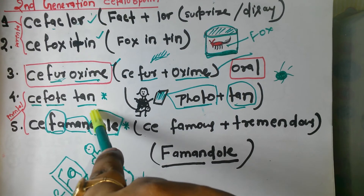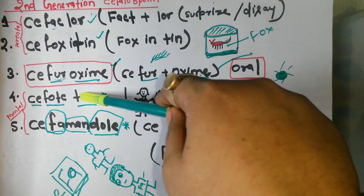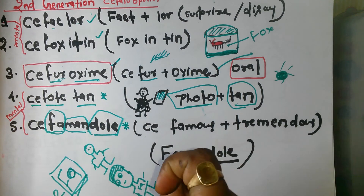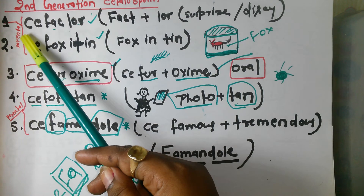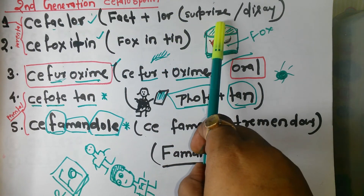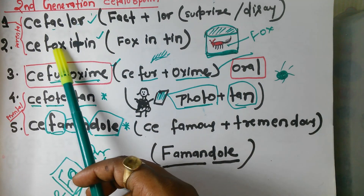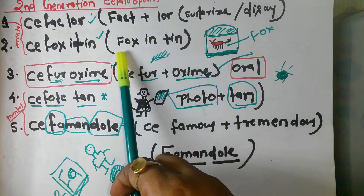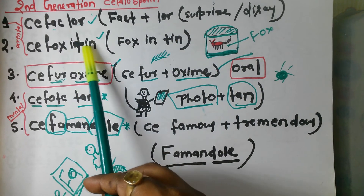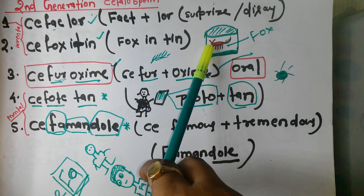In second generation, previously in old books there were only three drugs, but in the latest edition they added two more drugs. The mnemonic is 'see fox in tin' — this is a fox in a tin. So Cefoxitin: everyone is familiar with fur; fur is very famous in high-society women.